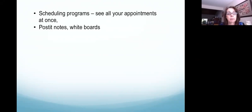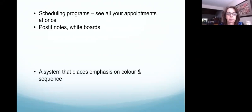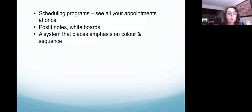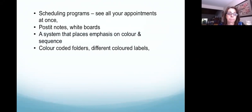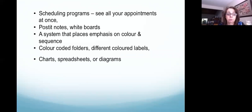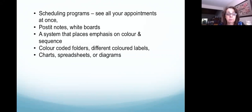Putting it into the calendar on your phone or computer isn't really the best way of scheduling for a visual learner. You really want a system that places emphasis on color and sequence — color-coded folders, different colored labels, different textures, charts, spreadsheets, or diagrams are key for a visual learner.